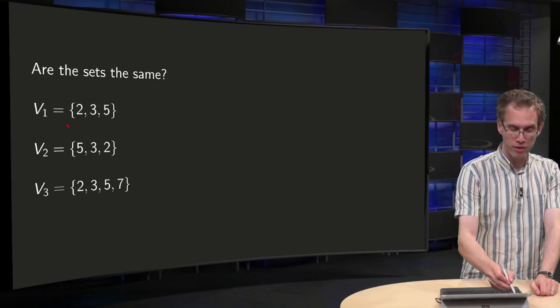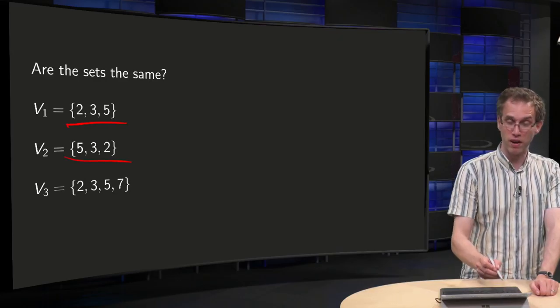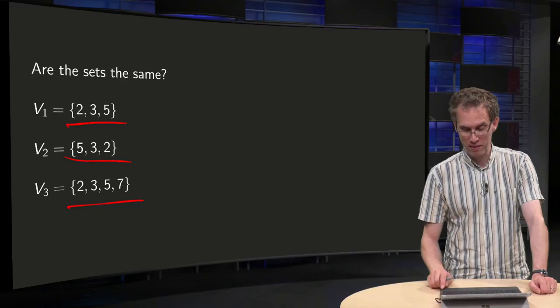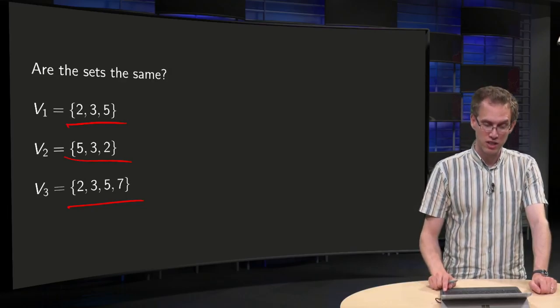We have three sets: V1 equals {2, 3, 5}, V2 equals {5, 3, 2}, and V3 consisting of the elements {2, 3, 5, 7}. Are they the same or not?